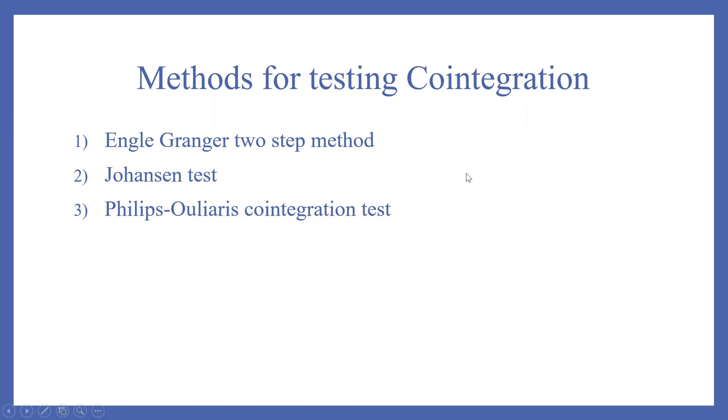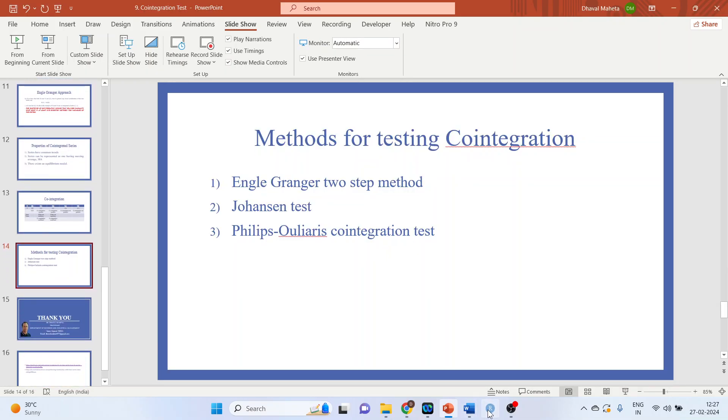Methods for testing cointegration are Engle Granger 2-step method, Johansson test, and the last one is Phillips Ouliaris cointegration test. Now let's see how we can do this in R. For this, we will go in R.